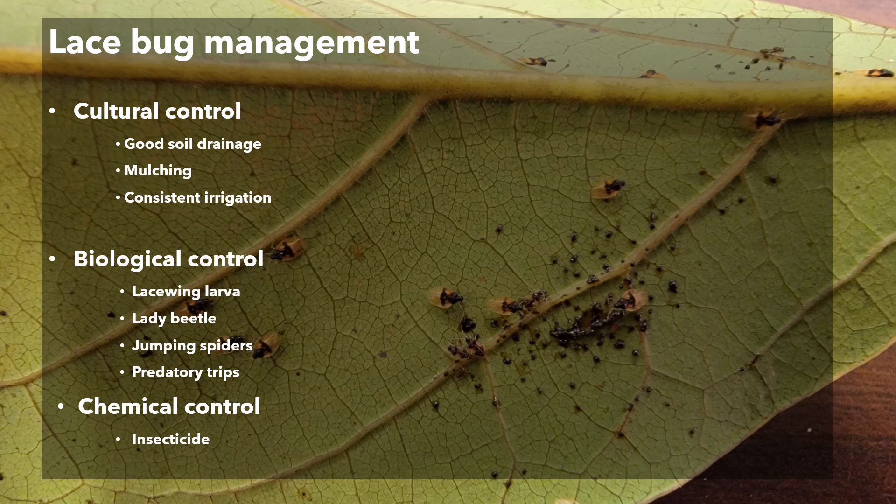The first step to control lace bug is keeping the tree healthy, primarily by providing good soil drainage, maintaining a thick layer of organic mulch under the canopy, and applying an appropriate amount of water.